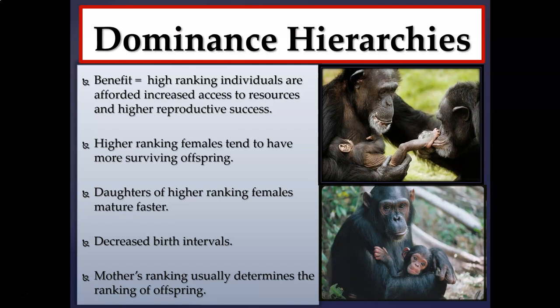High-ranking females also have decreased birth intervals, all related to increased access to resources — food, protection, and territory — making them more likely to support the survival of both themselves and their offspring. Decreased birth intervals refers to the period of time between successive births; shorter intervals mean the female will likely have more offspring in her lifetime. A mother's ranking usually determines the ranking of offspring, especially in chimpanzee society.